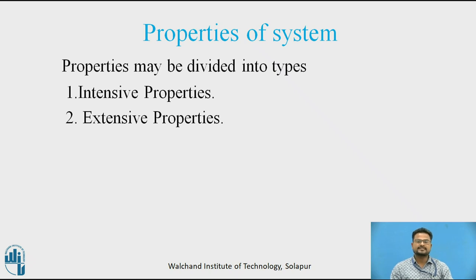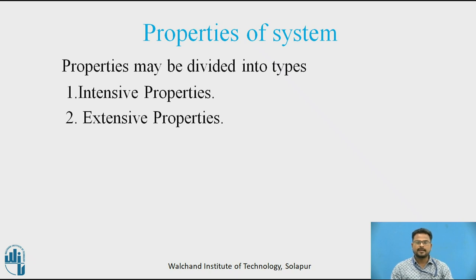Coming to the extensive property: properties which depend on the size of the system, such as length, volume and energy, are extensive properties. The ratio of an extensive property to the mass is called the specific value of that property. Examples of extensive properties are: volume, surface tension, enthalpy, entropy, potential energy, etc.